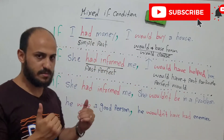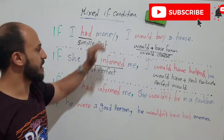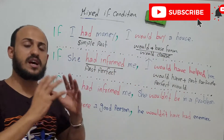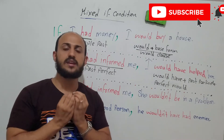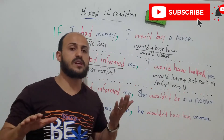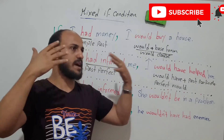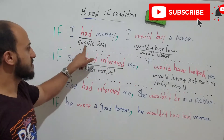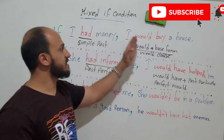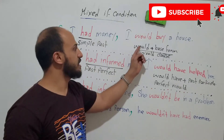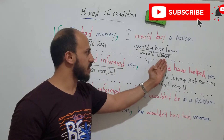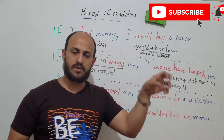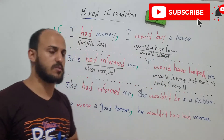As we studied before, if I had money, I would buy a house. This is a hypothetical and imaginary situation that is not real — I'm just imagining now. So we use after 'if' simple past, and in the second clause we need a would-clause, which is 'would' plus base form. The verb must be base form.